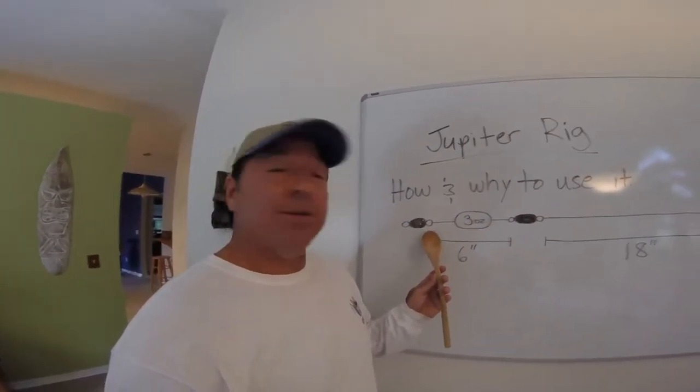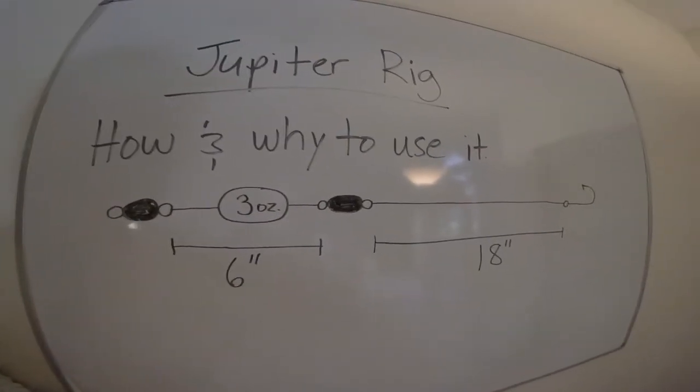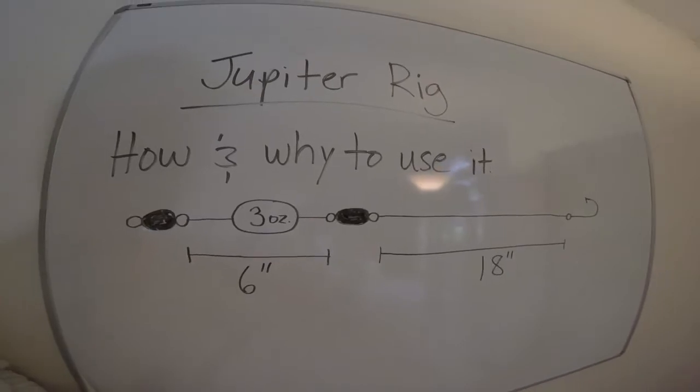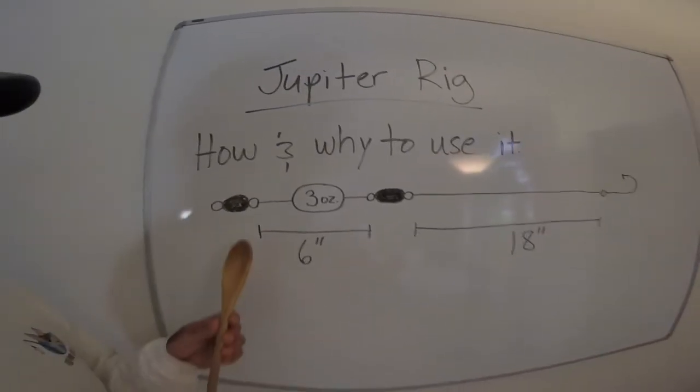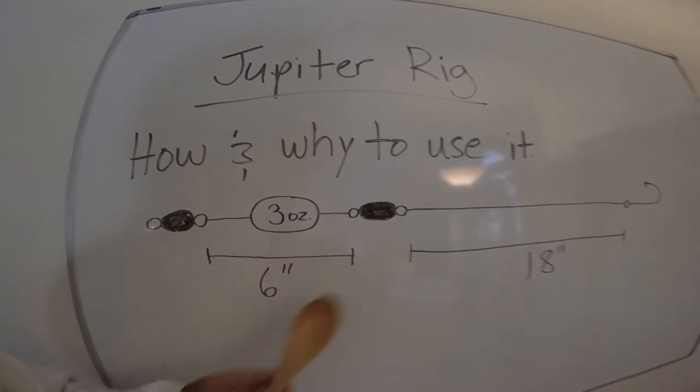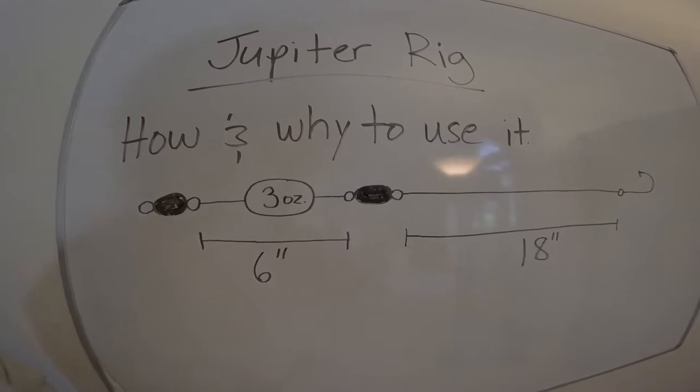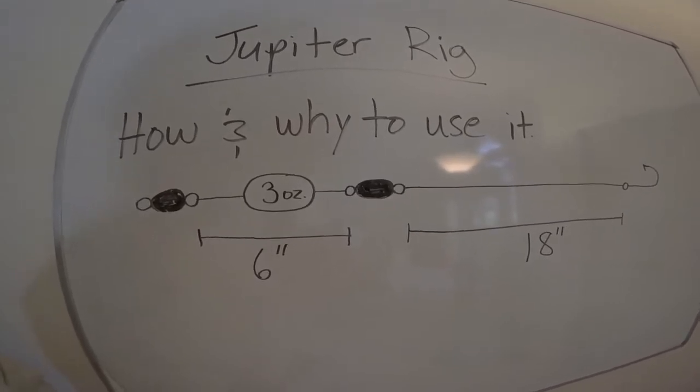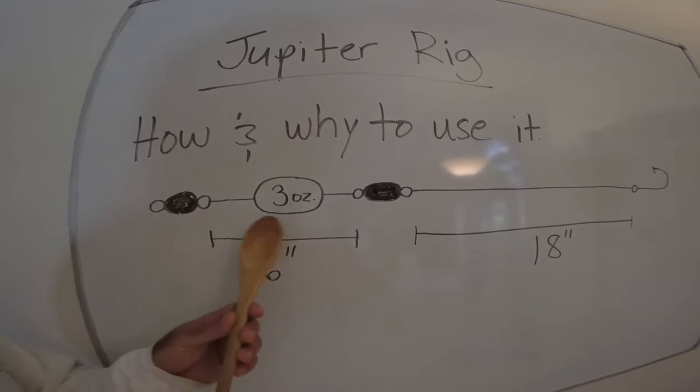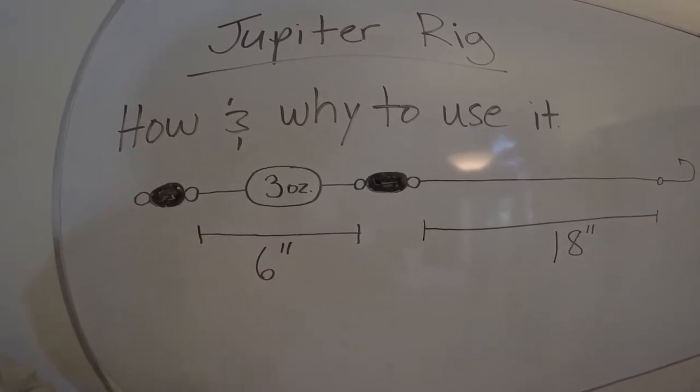So you're basically going to have your swivel. Let me get a better look at my artwork here. Hopefully you can see that. So basically you're going to have a swivel and then about six inches of leader in between there and you want it to be a 60, maybe 80 pound test, a leader, and then whatever size sinker you're going to need.